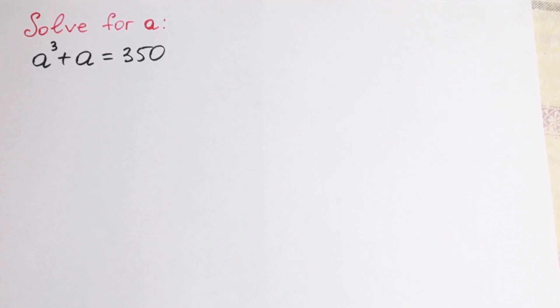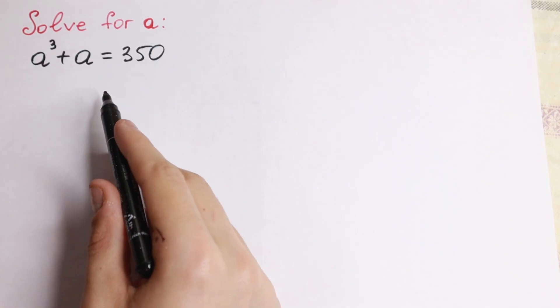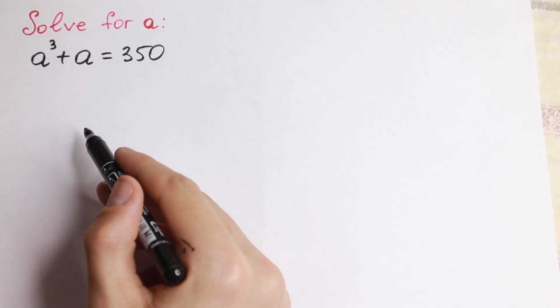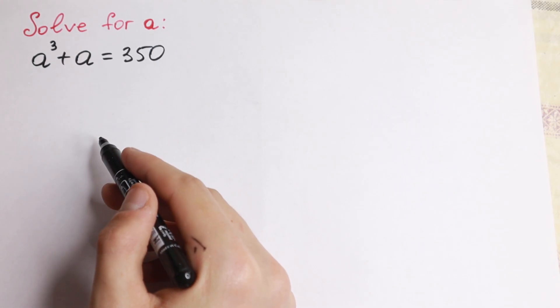Hello everyone, welcome back to higher mathematics. Really interesting equation today. We have a cube plus a equal to 350 and we need to find our a, we need to solve this equation.